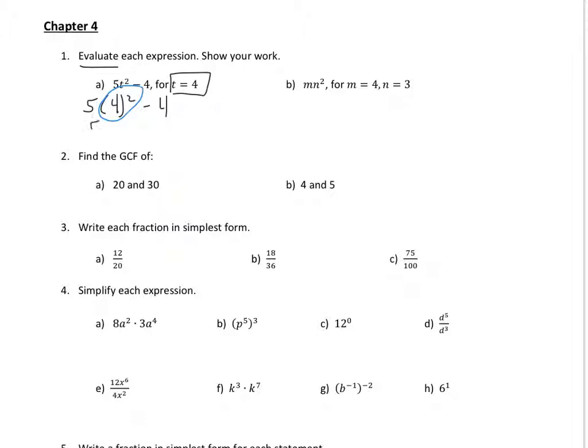So it's 5 times 16 minus 4. So next you do 16 times 5. So 16 times 5 is 80. So 80 minus 4 is 76.